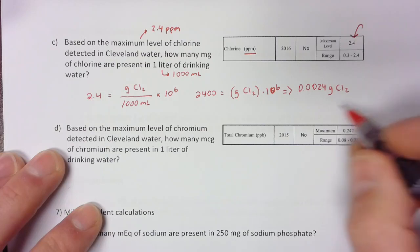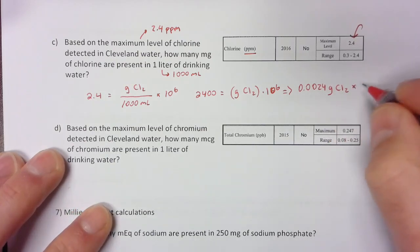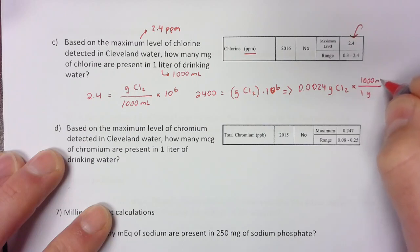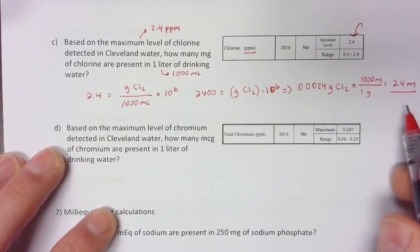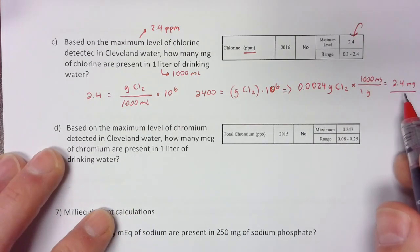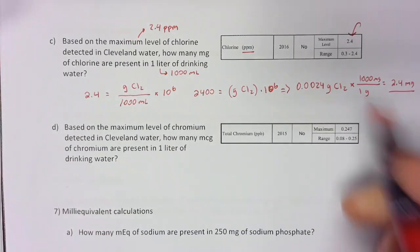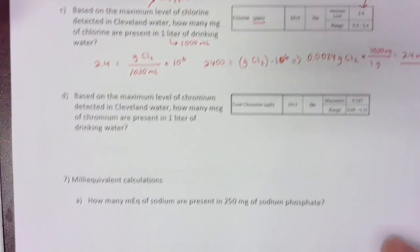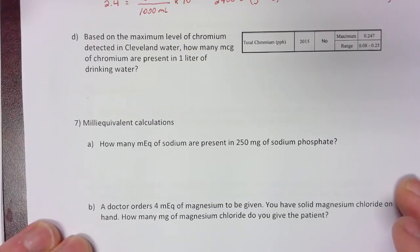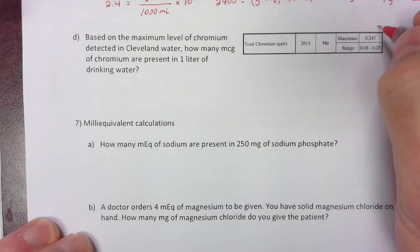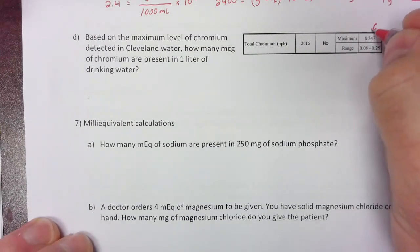Converting 0.0024 grams into milligrams gives 2.4 milligrams. So that's how much chlorine is present in one liter of water based on the 2.4 ppm concentration. Now let's look at chromium — how much chromium is present based on its maximum level?